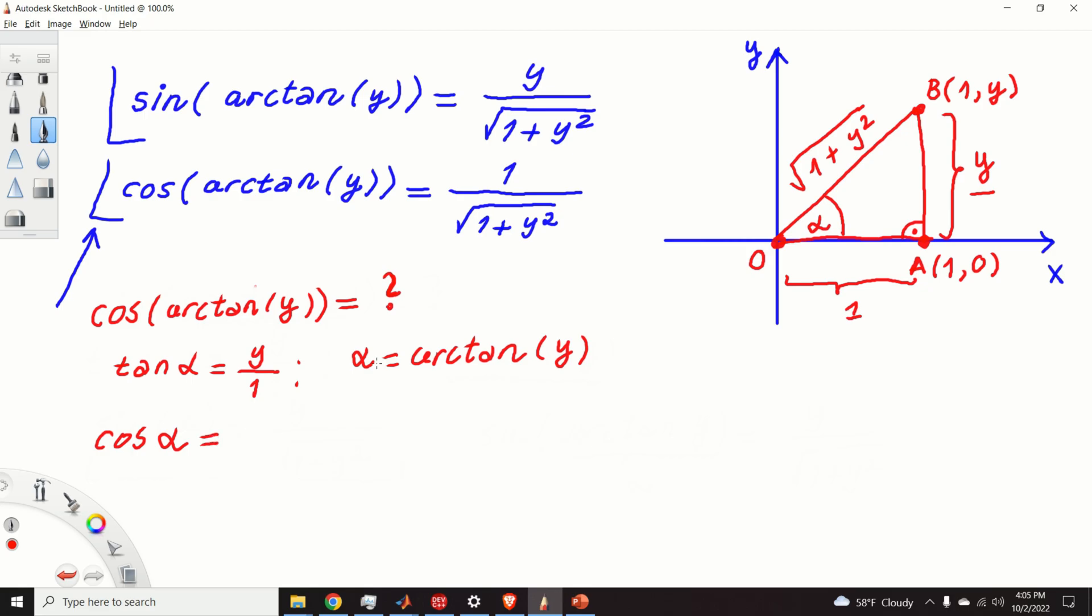And, from this triangle, cos(alpha) is equal to 1 over the square root of 1 plus y squared. And we are almost there, right? Since we have cos(alpha), we can just simply write cos of arctan(y). And this is equal to 1 over the square root of 1 plus y squared.